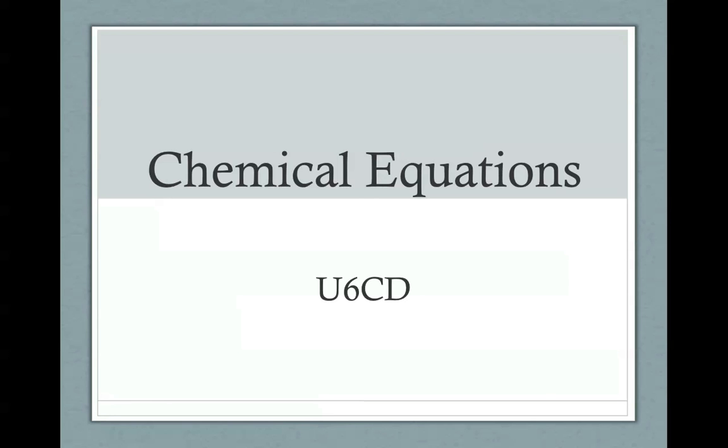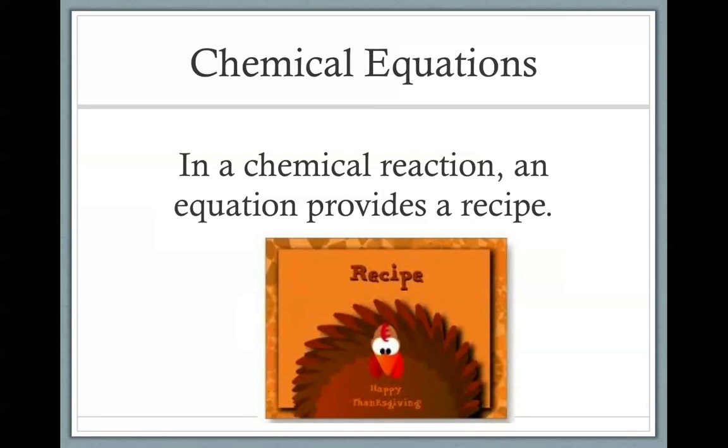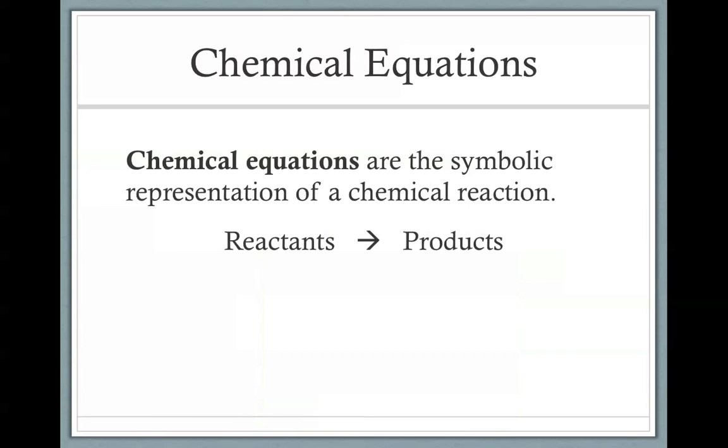All right, welcome. We're going to be going over and focusing on how to balance chemical equations, but we're basically going to review right now is why we do it. Again, a chemical reaction is just an equation that basically provides us a recipe. It tells us our reactants in our products, so what goes in, and then what's produced at the end.